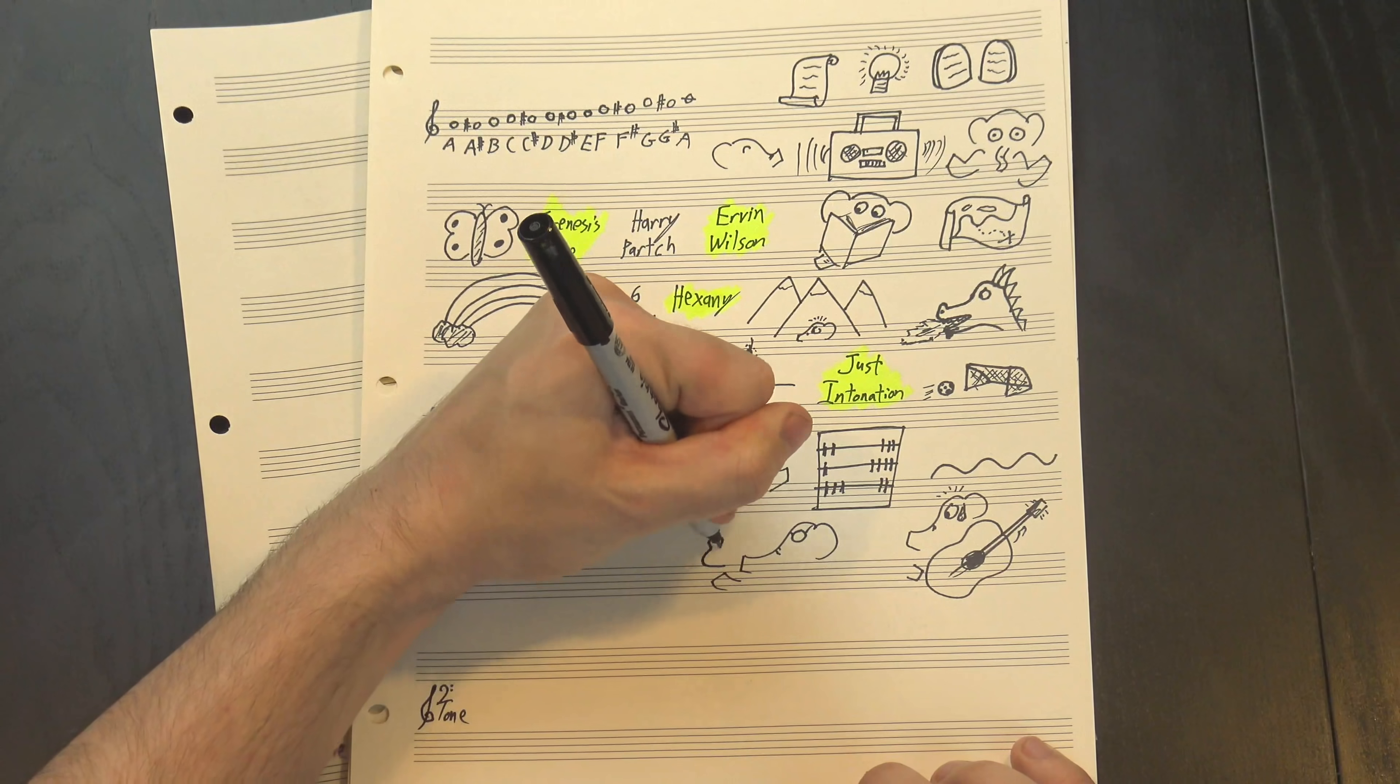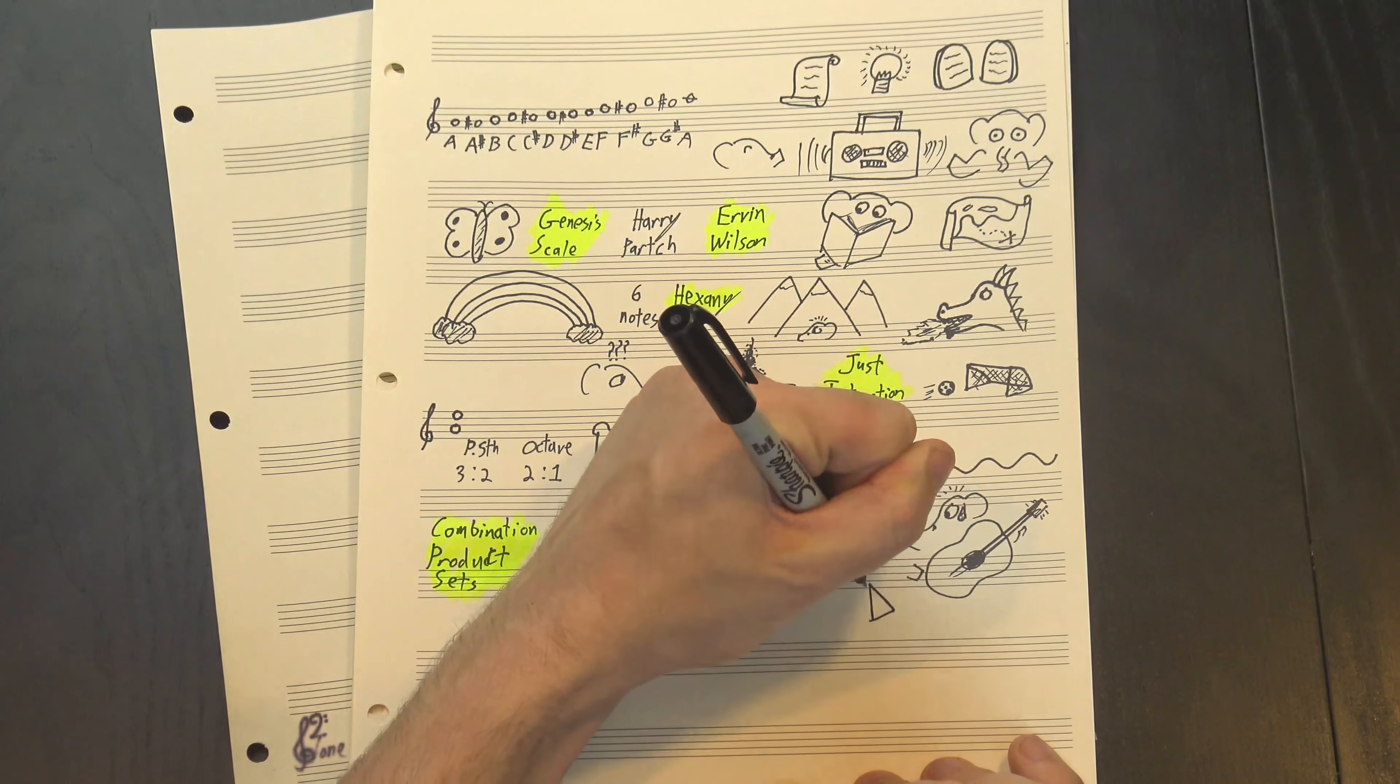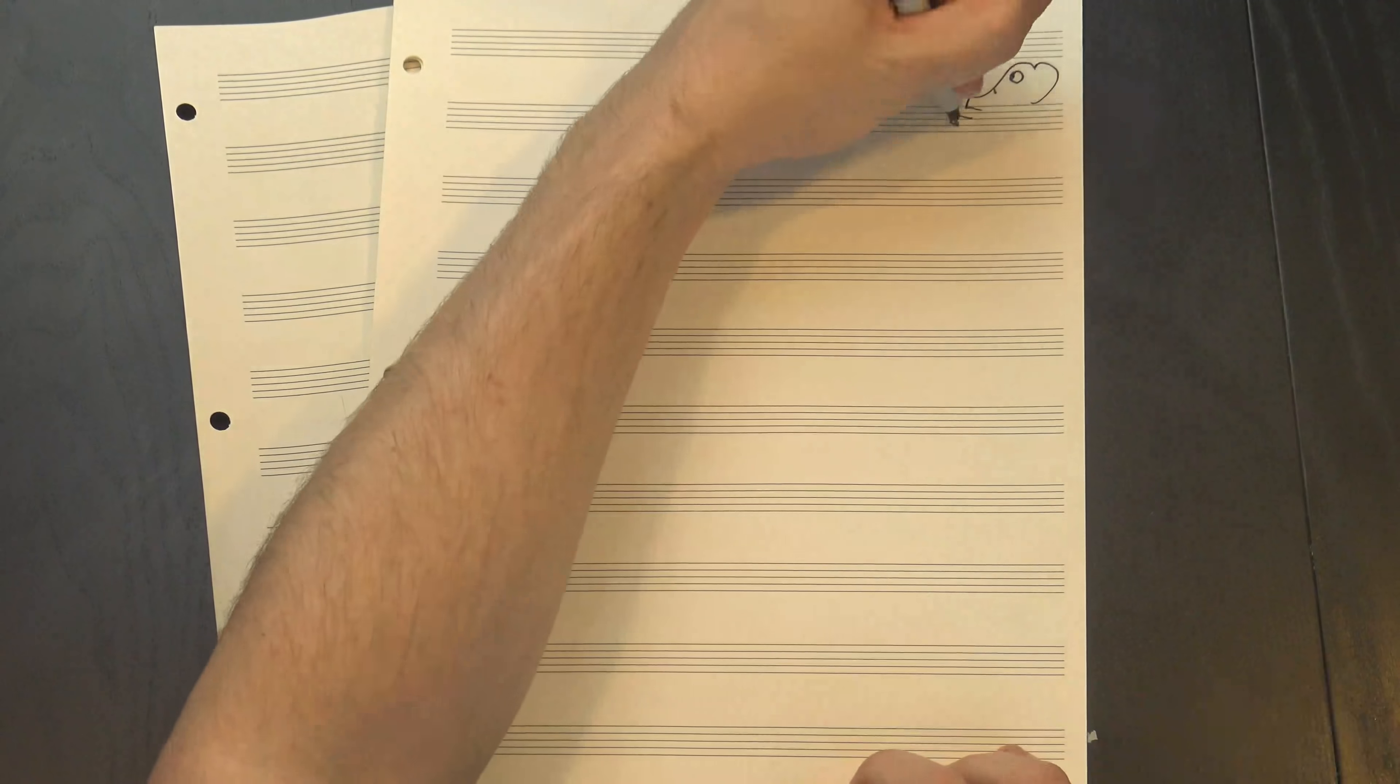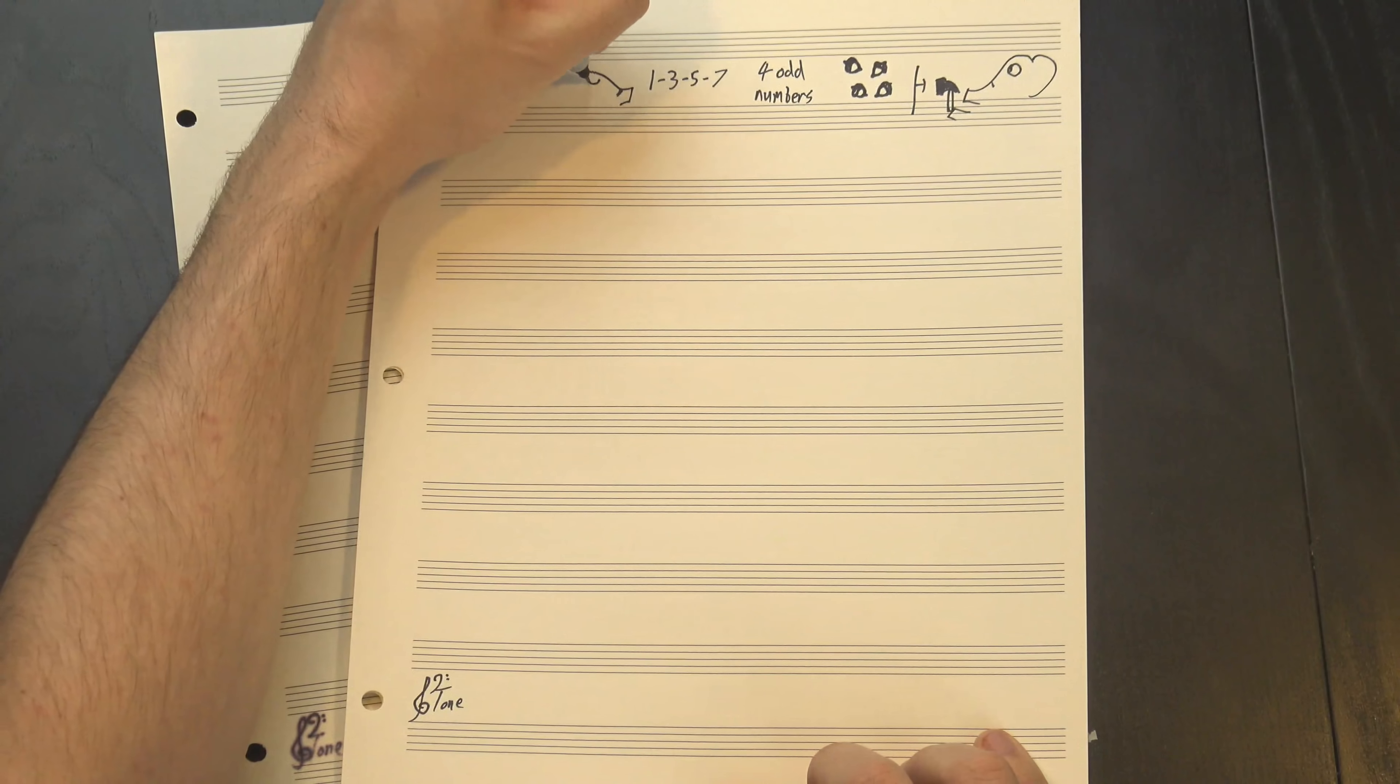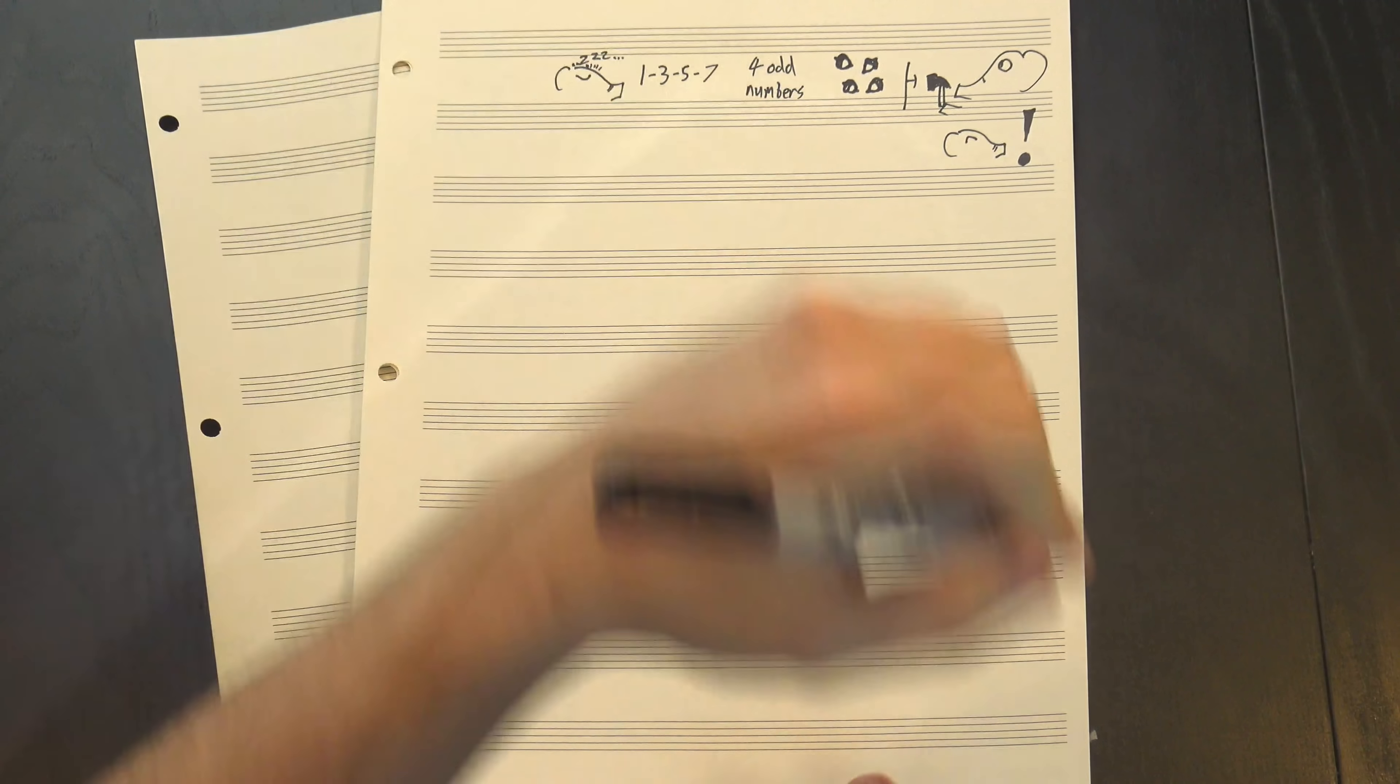The Hexany was part of Wilson's contribution to this effort. It's the smallest interesting version of a group of models he developed called combination product sets. While it's usually depicted on the corners of an octahedron, I find it easier to visualize with a cube—plus, it's easier to draw. Anyway, to build a Hexany, we need to start with four seeds. These can be any four odd numbers, but for this we'll go with the simplest group: 1, 3, 5, 7, because I'm lazy and don't want to deal with big numbers. Oh, and because it creates the most consonants, which is kind of the point. But mostly it's the laziness.